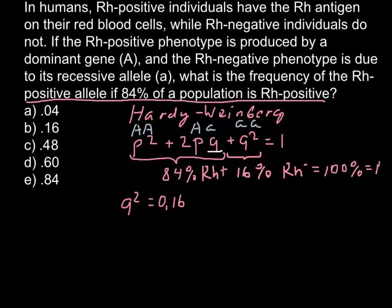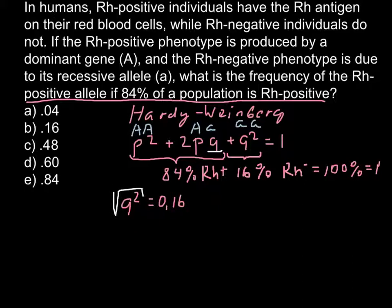When we add all the numbers, we should get 1. So 16% — since 1 is 100 times less than 100 — we have to reduce this number by 100, giving us 0.16. We need to find q, and we are given q². So we take the square root from both sides, and we get q equal to 0.4.